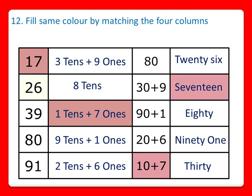The next number is 26. We are using the yellow color. In the second column, 2 ten's plus 6 ones — that is 20 plus 6. In the third column, color it. And in the fourth column, 26. So we have colored 26, which is written in different ways.